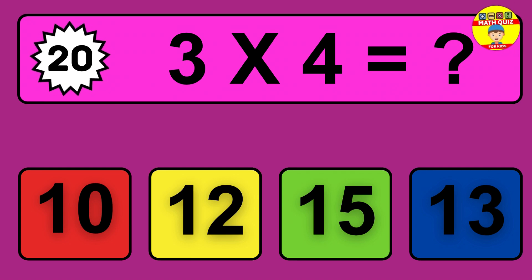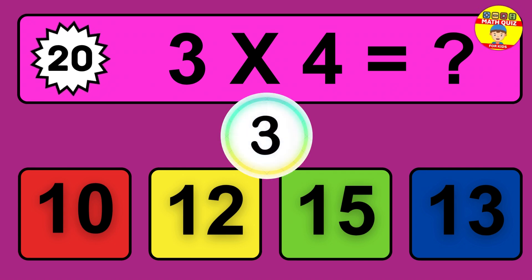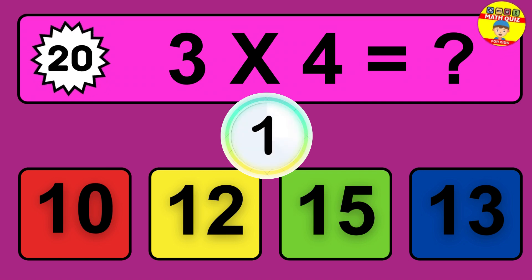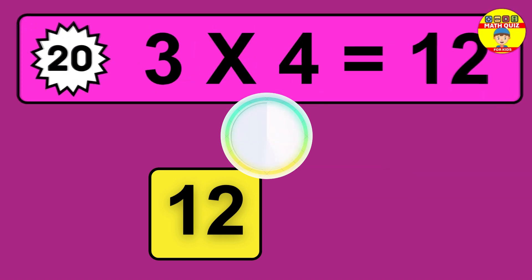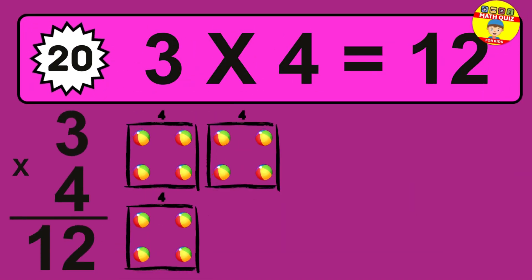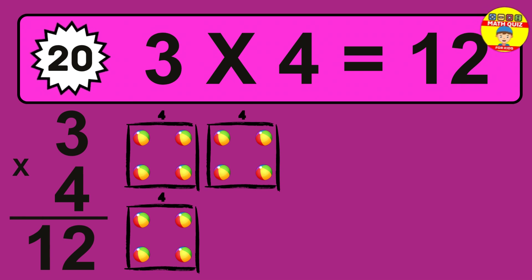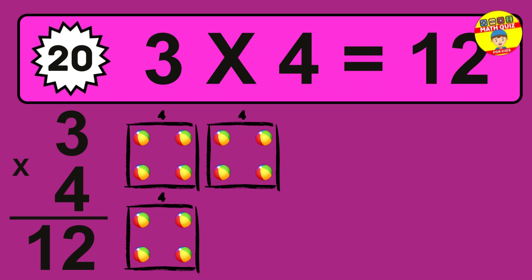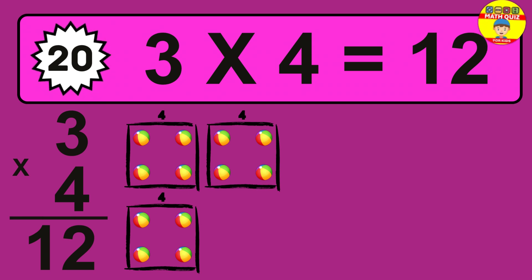Question 20. 3 times 4 equals what? The answer is 3 times 4 is 12. So how many balls do we have? 12 balls.